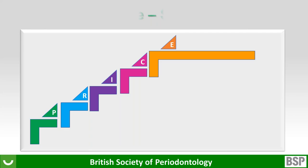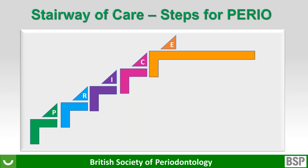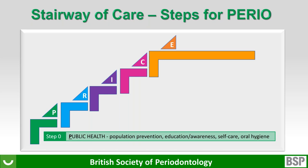I've always looked upon Perio as a staircase. I use the acronym PRICE. The base is public health and population prevention — something we are incredibly poor at in this country. We rely on our industry partners to get prevention campaigns out there. When did you last see a TV advert from Public Health England about preventing periodontal disease? The BSP has done incredibly well in the last five to ten years, but we haven't quite hit the national media yet in terms of TV adverts.